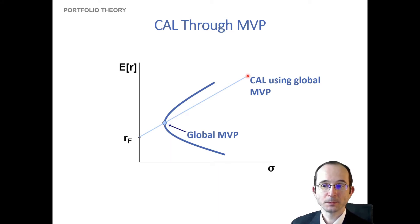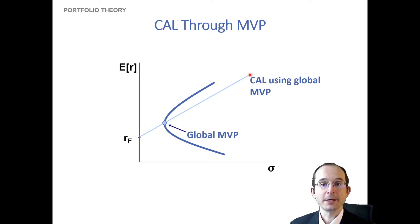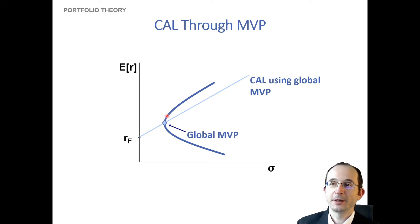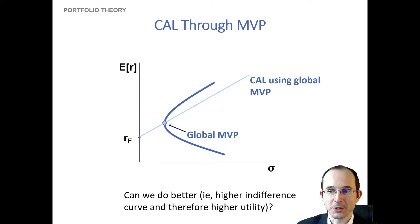It's worth asking: can we do any better than this? The answer is yes. If we move from the minimum variance portfolio up a little and draw a capital allocation line through a higher point on the frontier, that would have a higher slope and a higher Sharpe ratio. So we can actually increase the indifference curve we are on and get a higher utility.